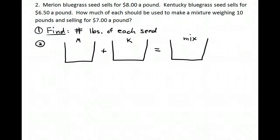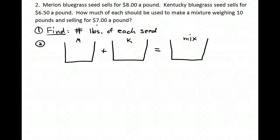Here's the next problem: Marion bluegrass seed sells for $8 a pound; Kentucky bluegrass seed sells for $6.50 a pound. How much of each should be used to make a mixture weighing 10 pounds and selling for $7 a pound? This is a little different from the last one because I'm not given a total value for the mix — instead I have a price per pound and a total weight.